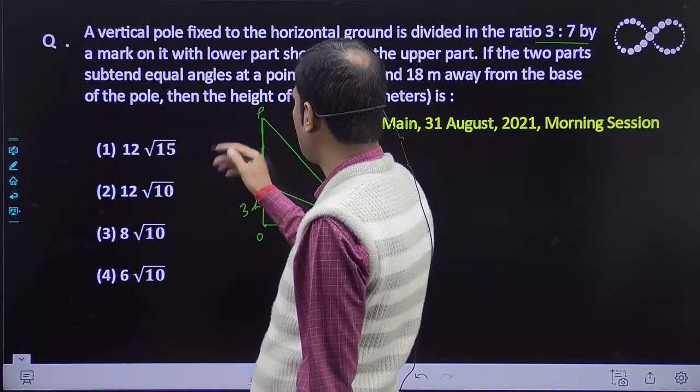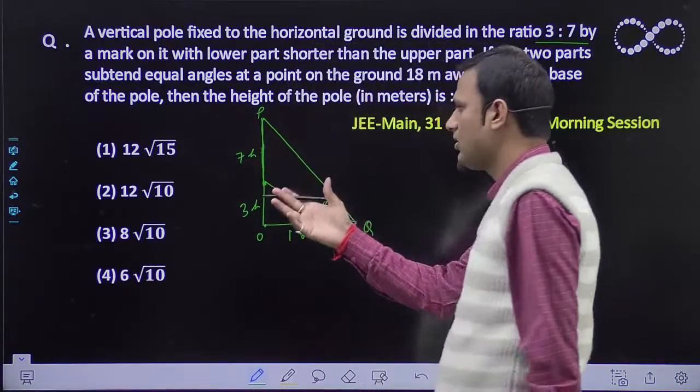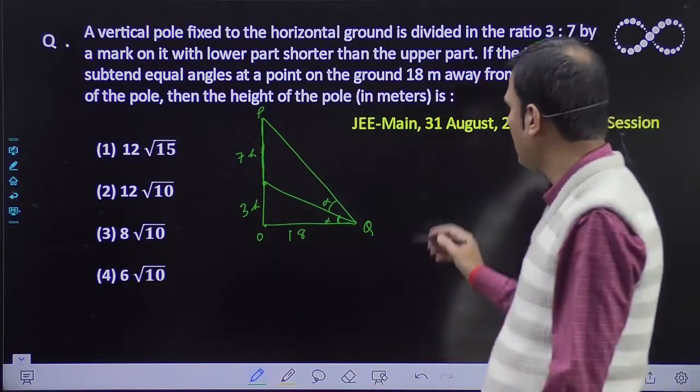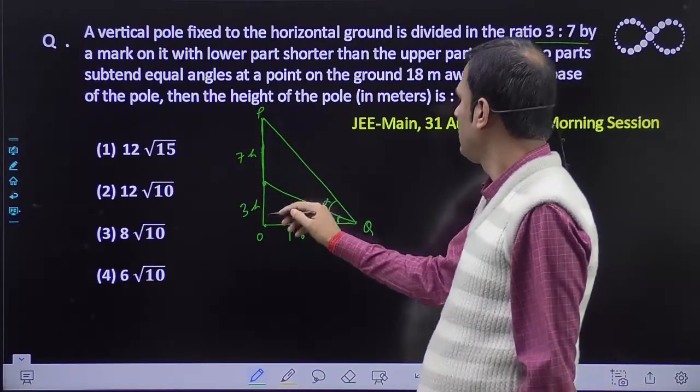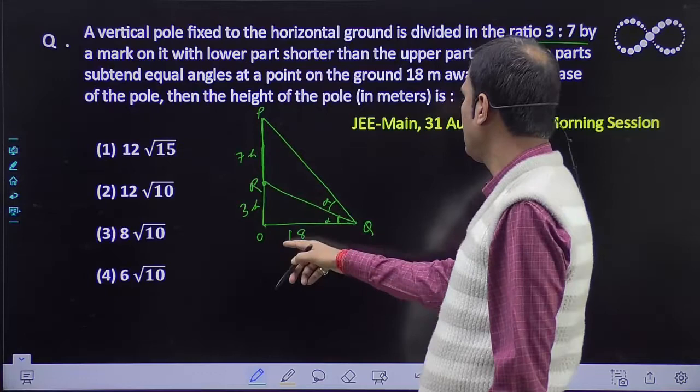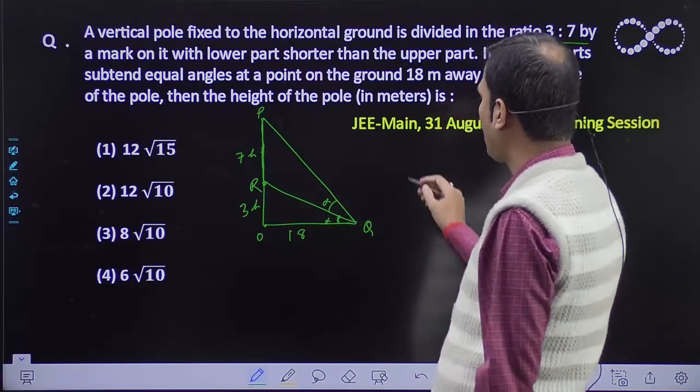What is the height of the pole? It becomes 10h. You need to find the value of 10h. This means you need to find h. So here in triangle OP, let me mark it Q, and in Q take tan alpha.